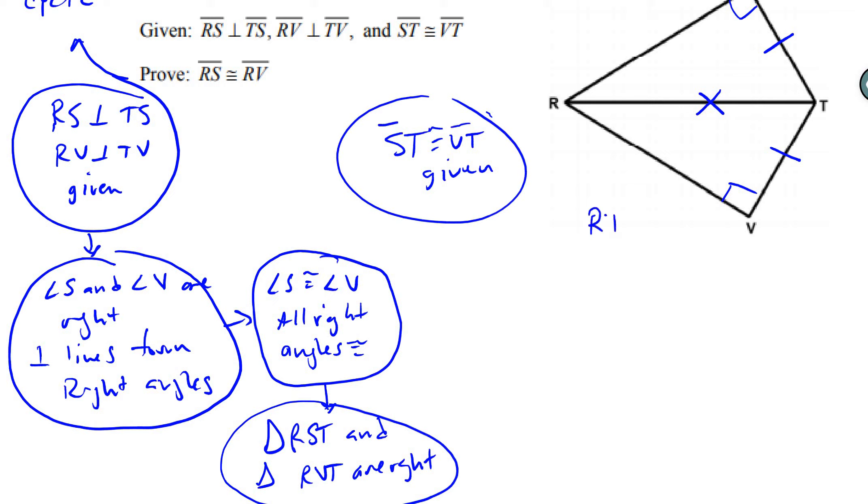We can say RT is congruent to RT. That's the reflexive property of congruence. Sorry, my handwriting.